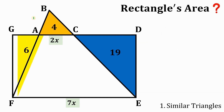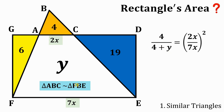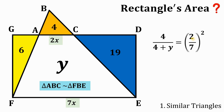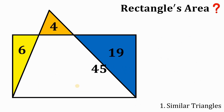Going back to our figure, since DEFG means GD is parallel to FE, triangle ABC is similar to triangle FBE. Let the white region equal Y. Using the ratio of areas again: 4 over (4 plus Y) equals (2x over 7x) squared, which simplifies to 4 over 49. Since the numerators are the same, 4 plus Y equals 49. Subtracting 4 from both sides, Y equals 45. So the area of the white region is 45 square units.